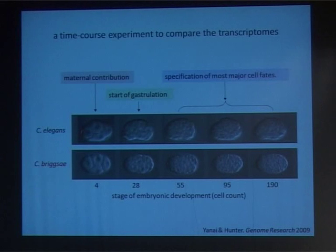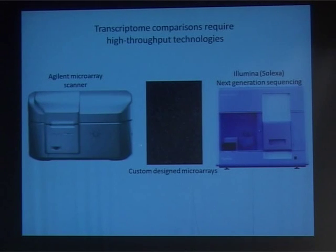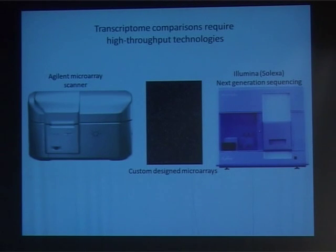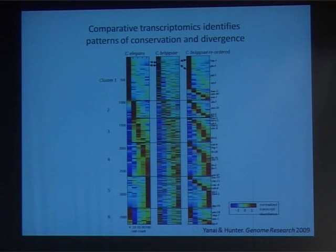We isolated embryos and wanted to see exactly which genes are expressed in each one. We used the technology of microarrays. There was no microarray for C. briggsae, so I designed one using the Agilent system. This is now the system of choice in the lab, although very soon we'll be moving to Illumina next-generation technology where you actually sequence every single read. We wanted to know: would the transcriptomes be near identical, reflecting the similarity of the phenotypes, or very distant, reflecting the genomic changes?